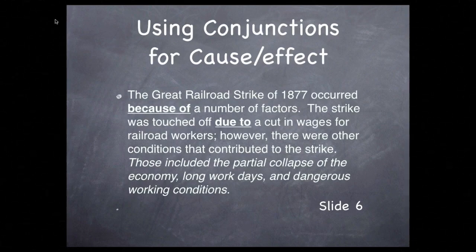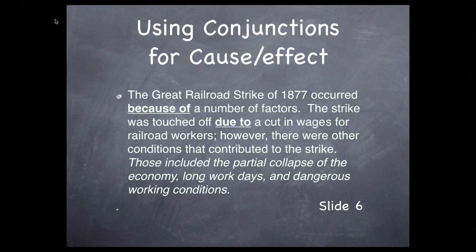Now we carefully join some causes with effects, being sure to communicate that this is no simple cause-effect relationship. Let's take a look at what's on the screen. The Great Railroad Strike of 1877 occurred because of a number of factors. The strike was touched off due to a cut in wages. So, 'because of' and 'due to' are the conjunctions that put that cause and effect together for railroad workers.